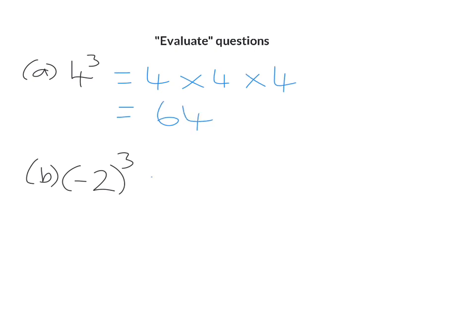Part B: minus 2 cubed. So when it's a negative number raised to a power, first thing to do is decide is your answer going to be plus or minus. Your rule would be if the power is odd, your answer would be minus, and if your power is even, your answer would be plus. So we're cubing this, so it's an odd power, so our answer is going to be minus, and then 2 cubed is 8.